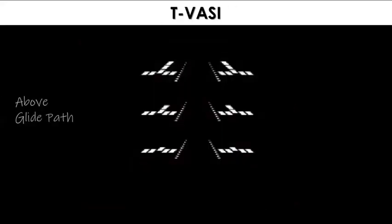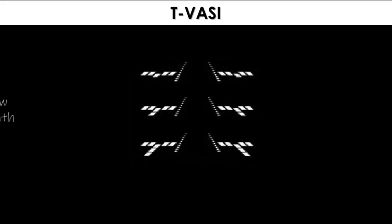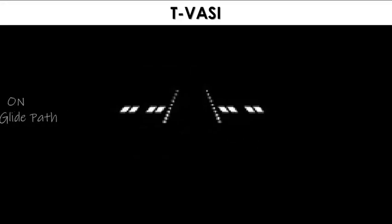This is the P-VASI system. When above the slope, the pilot will see an inverted white T with 1, 2, or 3 white fly-down lights visible — the higher the aircraft above the correct slope, the more fly-down lights are visible. When below the correct approach slope, the pilot will see a white T, and the lower the aircraft, the more fly-up lights will be visible. The pilot on glide slope will see a horizontal line of 4 white lights.